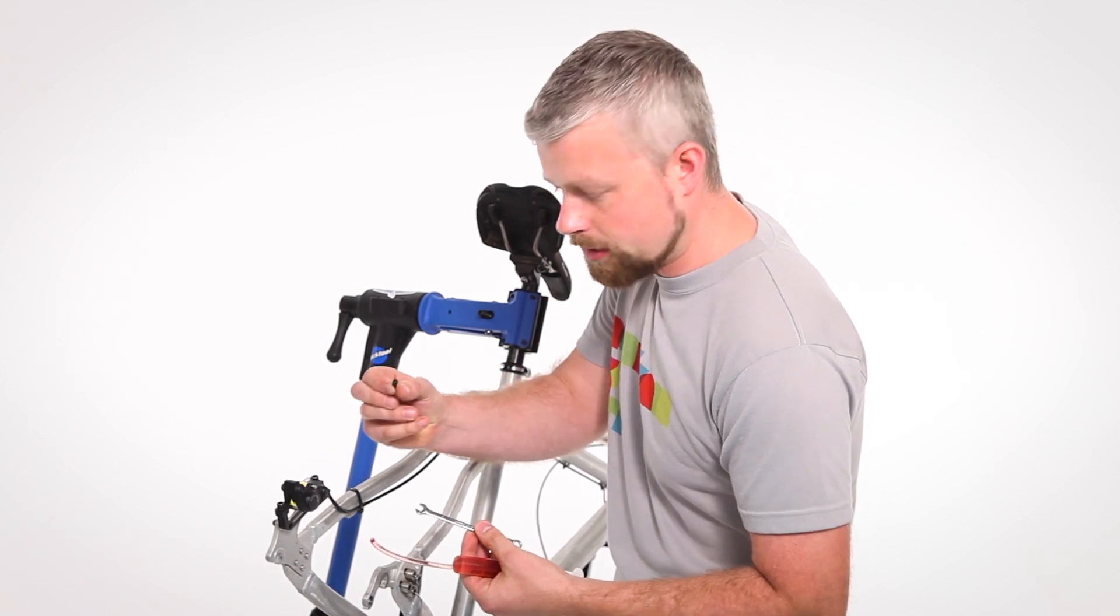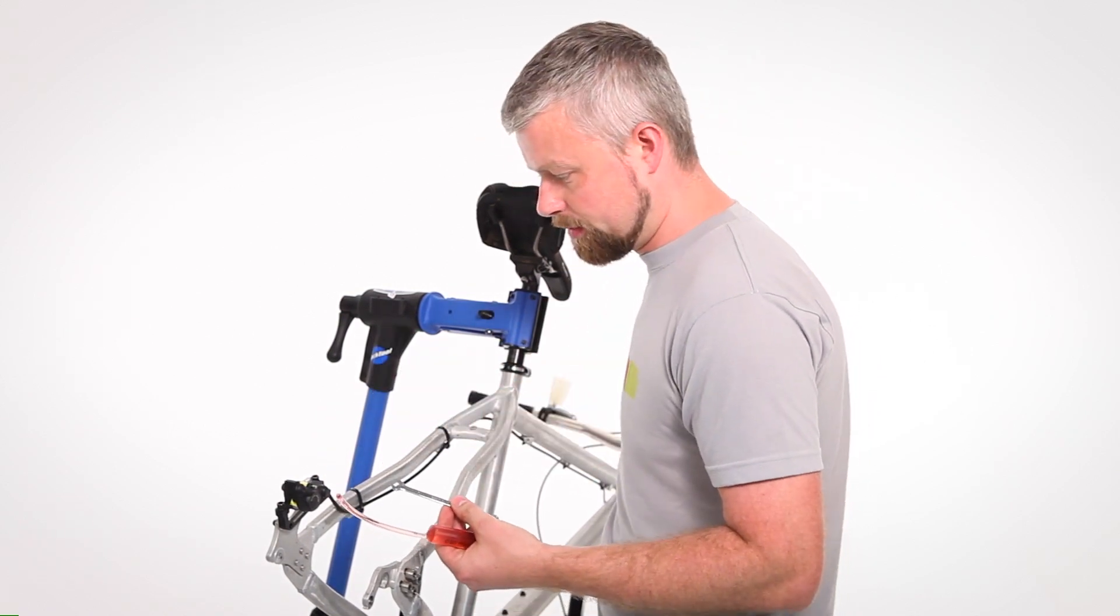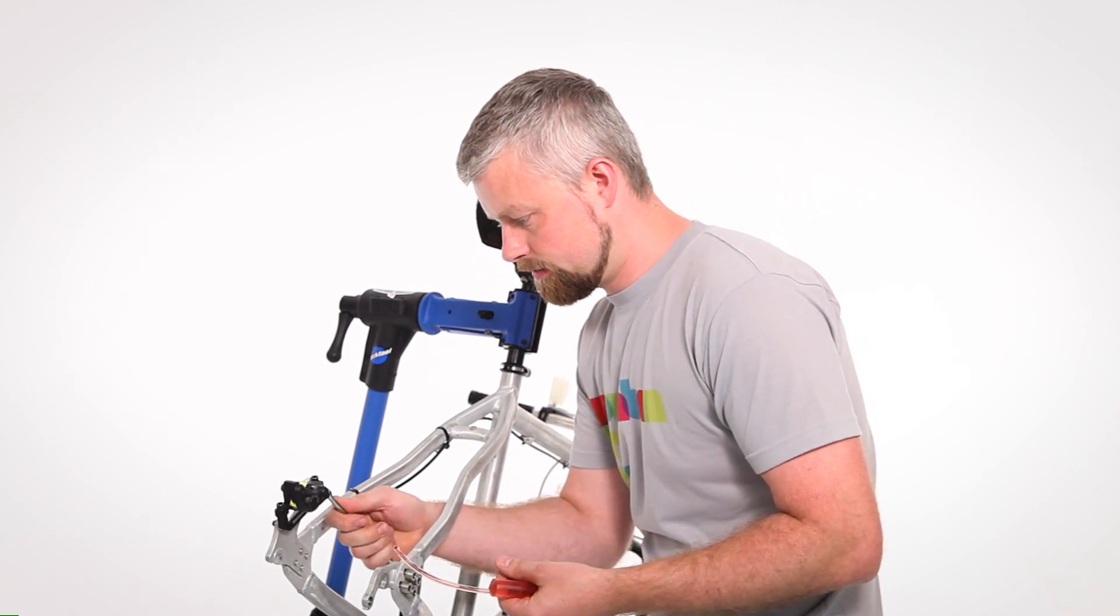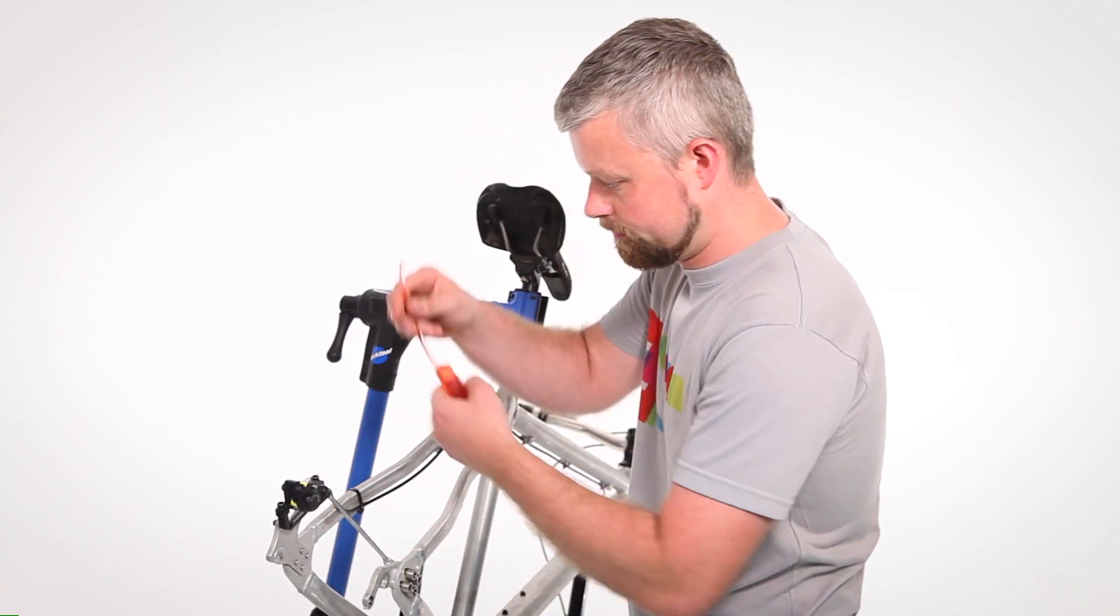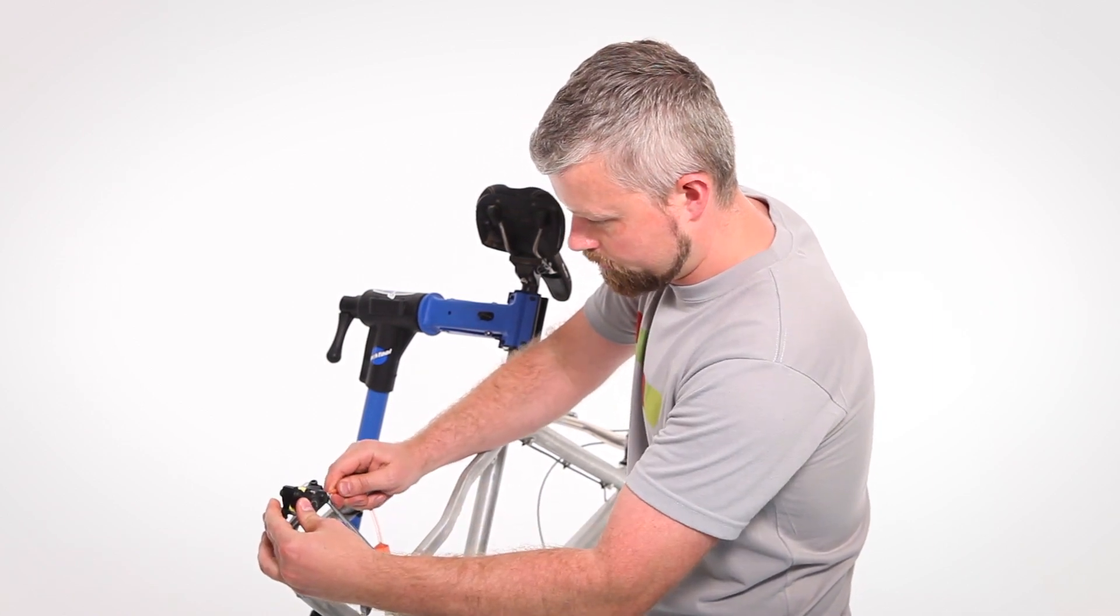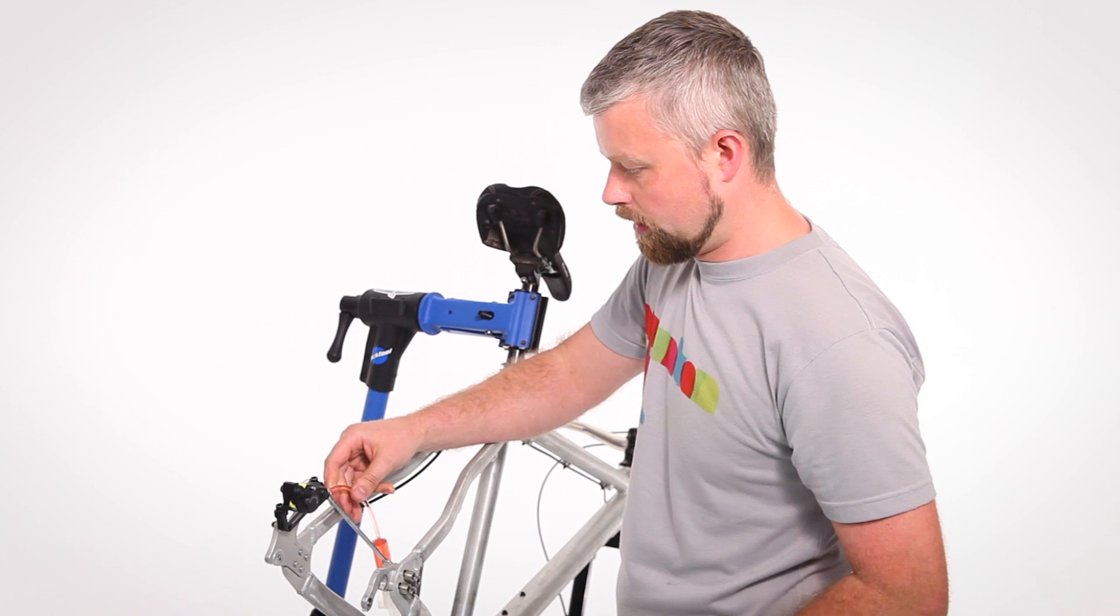Remove this little rubber dust cap from the bleed nipple on the caliper and fit your 7mm spanner. And then push the hose in place.